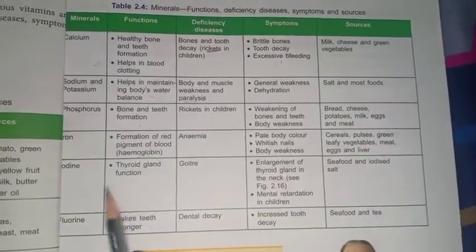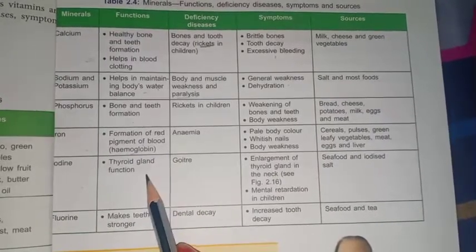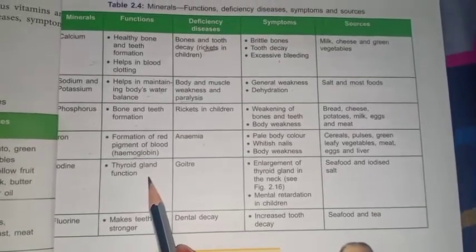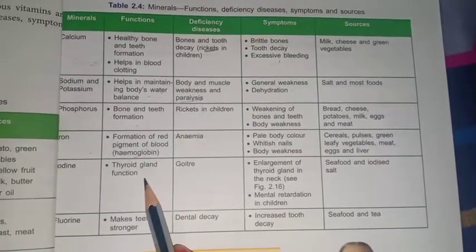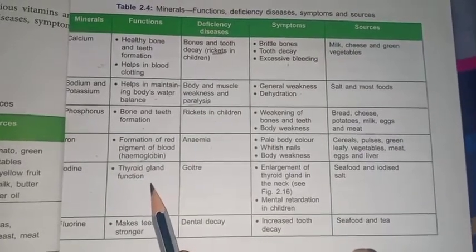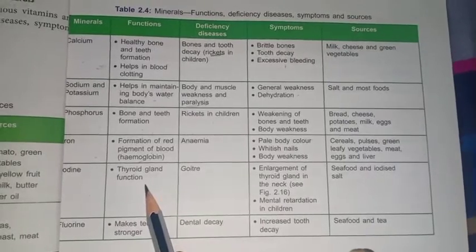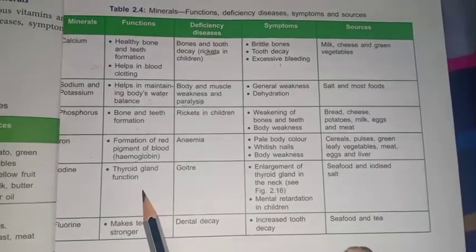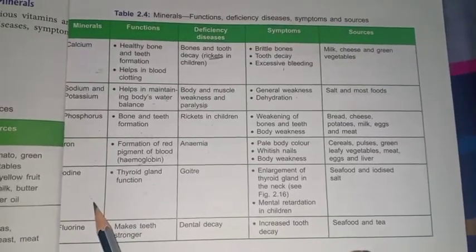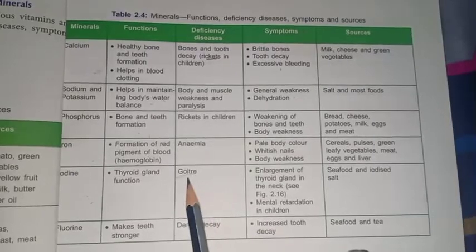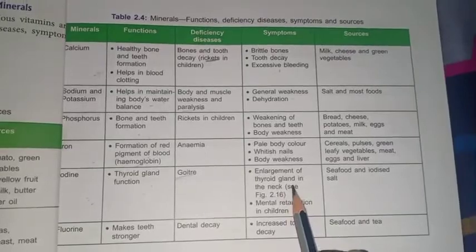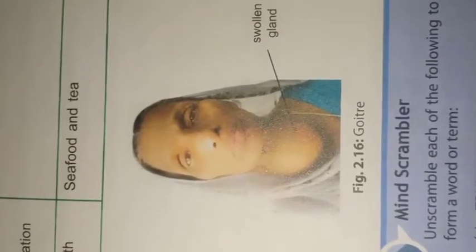Next we have iodine. Its function is the formation of the thyroid gland, which helps maintain thyroxine hormone in our body. Thyroxine hormone helps in the growth of the body. If there is a deficiency of iodine, it causes a disease called goiter. Symptoms of goiter are enlargement of the thyroid gland in the neck.